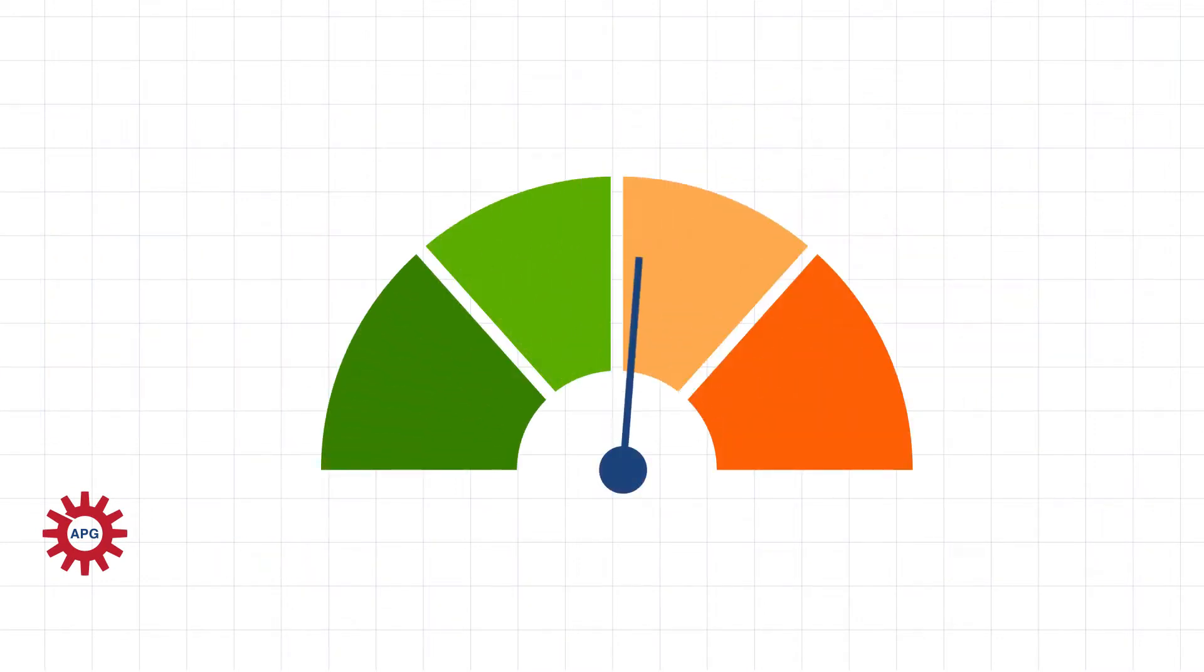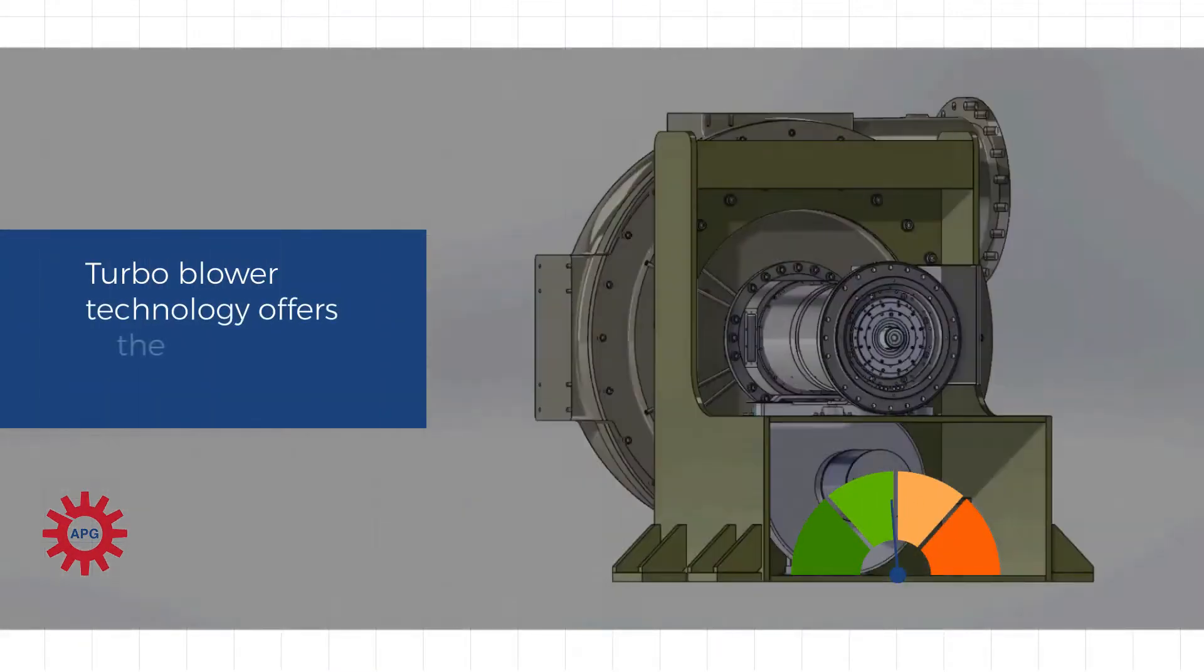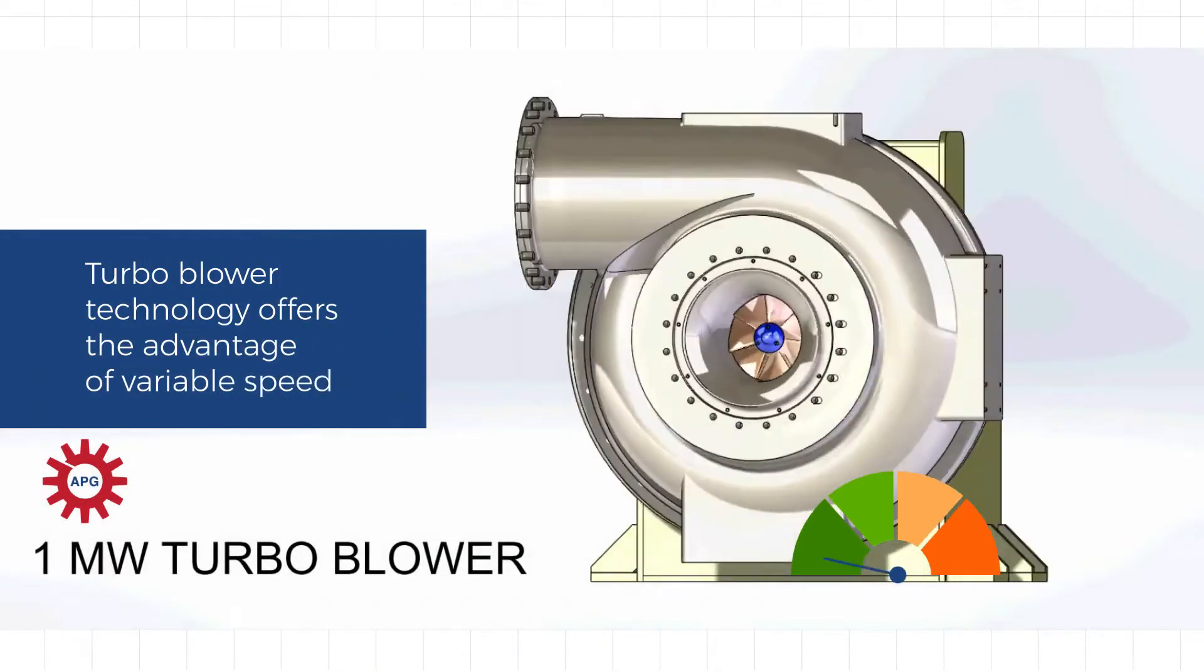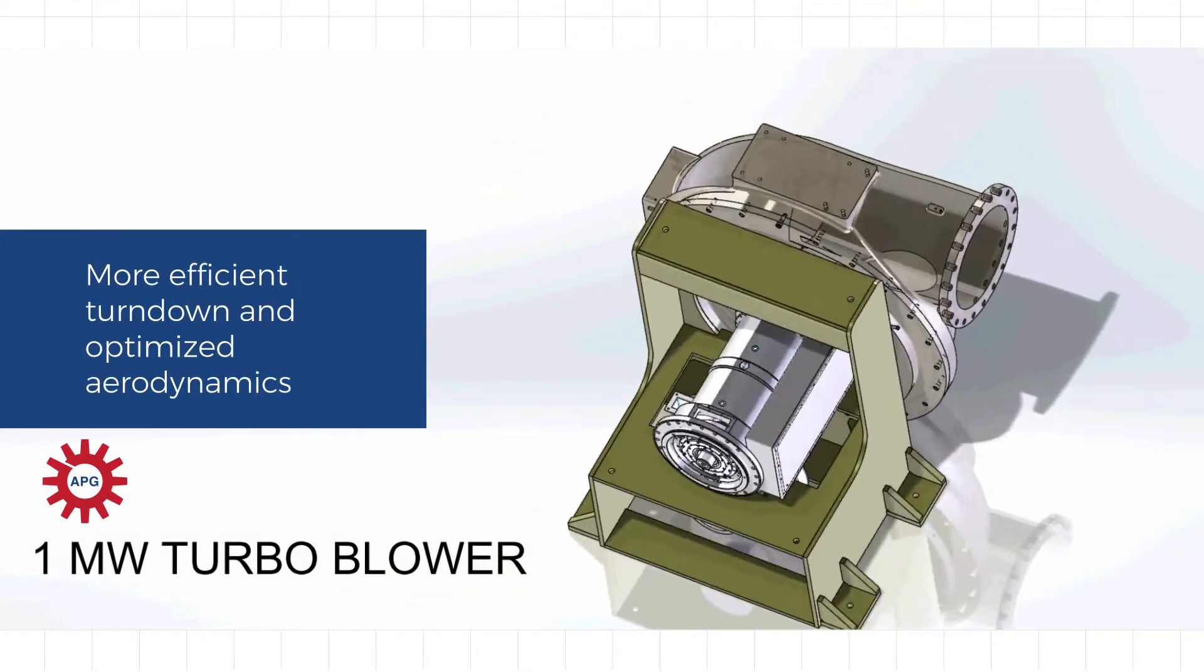Compared to very large single-stage geared centrifugal blowers, Turbo Blower Technology offers the advantage of variable speed, which allows for more efficient turndown as well as optimized aerodynamics for more efficient air compression.